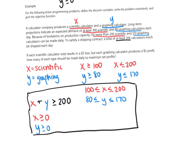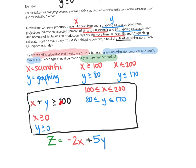The last thing we need is the profit function, or objective function. The objective here is to maximize net profits. We can call it Z or P. Each scientific calculator results in a $2 loss, and each graphing calculator yields a $5 profit. So our objective function is Z = -2x + 5y. This is our objective function, and the goal is to maximize it subject to the constraints.